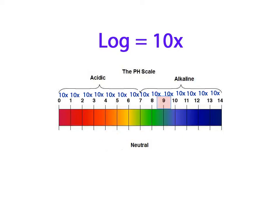In other words, a pH of 9 has 10 times more hydrogen ions than a pH of 10. A pH of 3 has 100 times more hydrogen ions than a pH of 5.